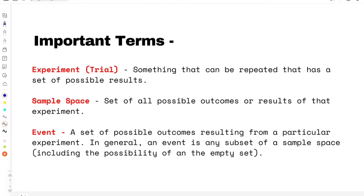We can toss the coin multiple times. The experiment — tossing of a coin — can be repeated and there is a set of possibilities: the coin can fall on its head, on its tail, or in rare cases on its side. If you take the case of a die, each time you throw a die it is an experiment or a trial, and there are only six possible outcomes — it could be from one to six. So that is an experiment.